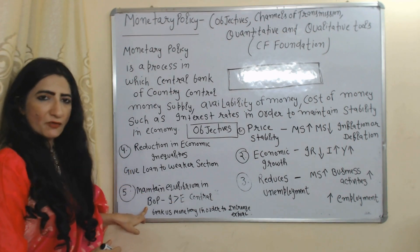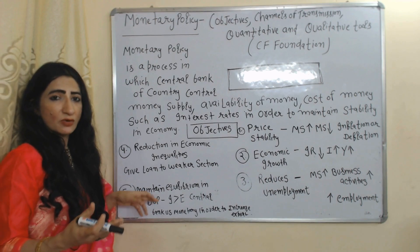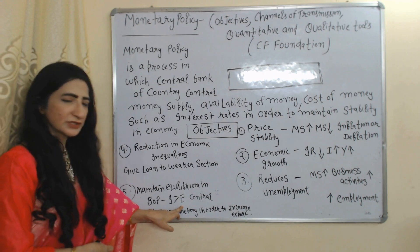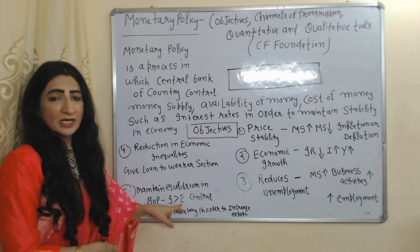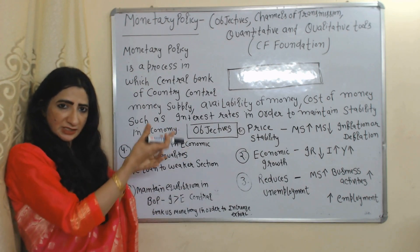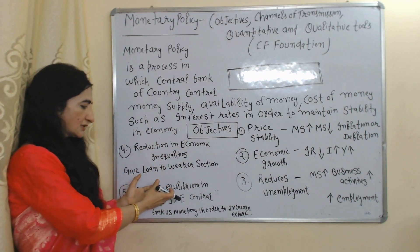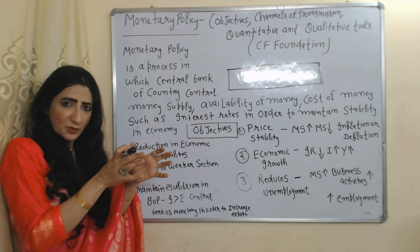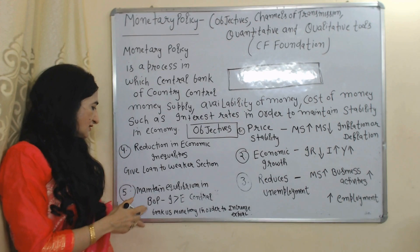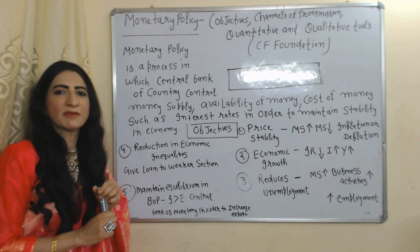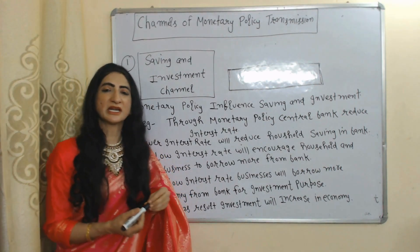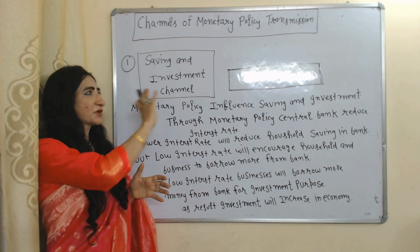Maintain equilibrium in balance of payment — a deficit in balance of payment means imports are more than exports. Through monetary policy, the central bank tries to increase exports. As exports increase, eventually imports and exports become equal to each other — as a result we can achieve equilibrium in balance of payment. Now we will see channels of monetary policy transmission.